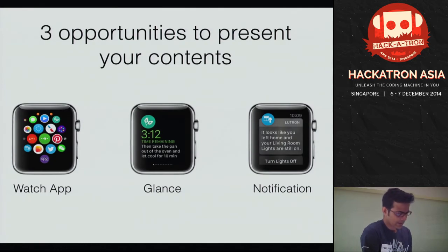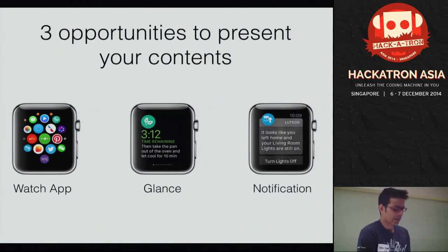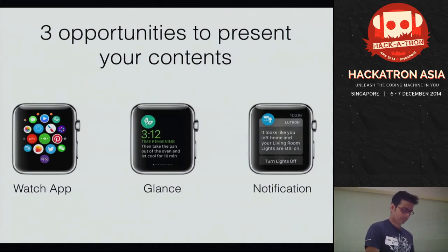There is a third type which is notification. If you have an iOS application and you don't have a Watch app yet, your users will still receive notifications on the Watch even though you don't have a Watch app. But you can customize your notifications if you do have a Watch app. I'll show you all three types today.